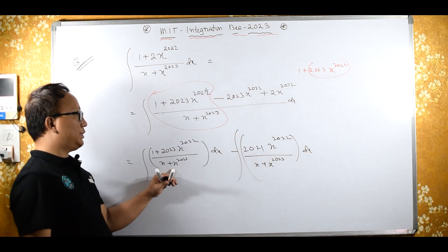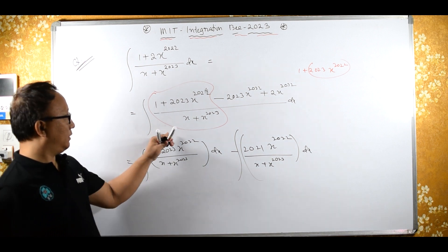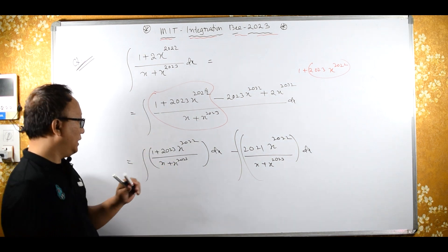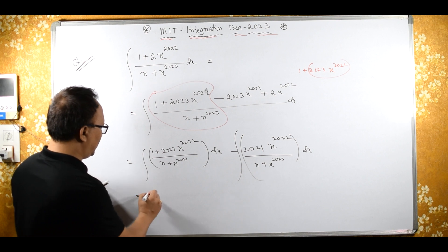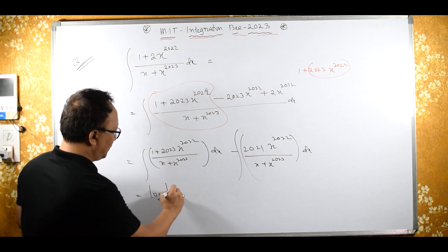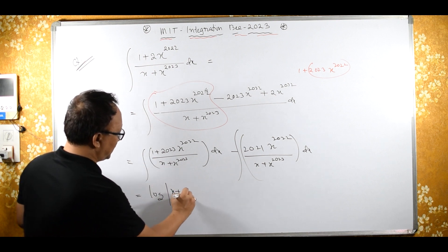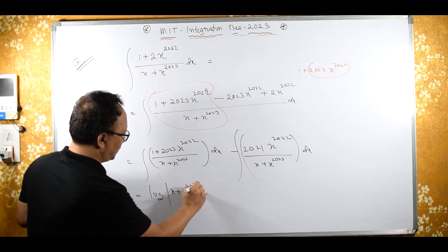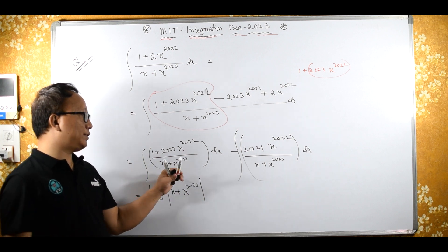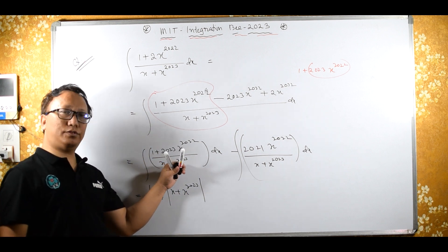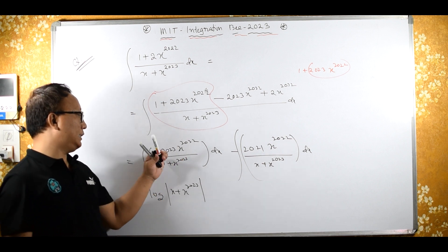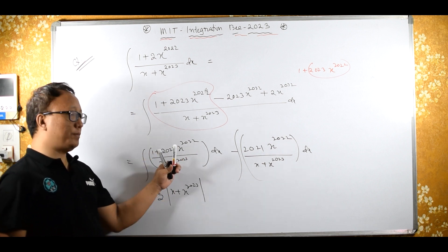Now, differentiation of the denominator becomes what? Differentiation of denominator becomes the numerator. Therefore, this integral becomes log of the denominator, means x plus x raised to 2023. Or you can substitute — substitute this, and du will be this. Therefore, that is log of u.